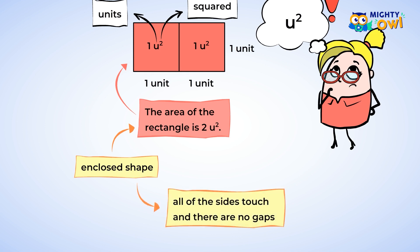Enclosed? That means that all of the sides touch and there's no gaps. For now, we're going to focus on rectangles, squares, and triangles.